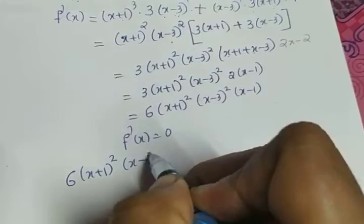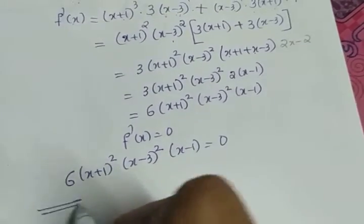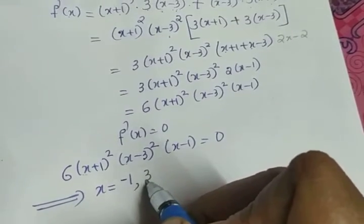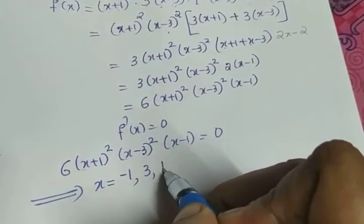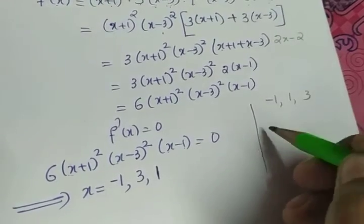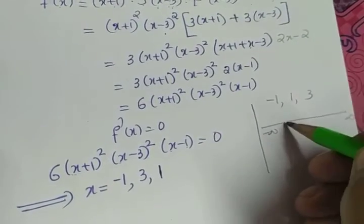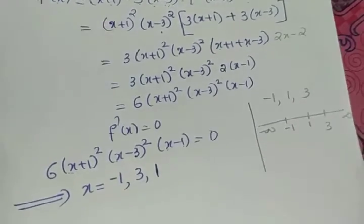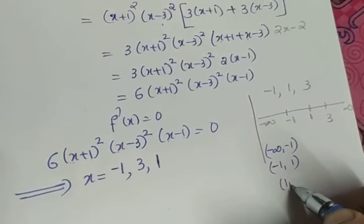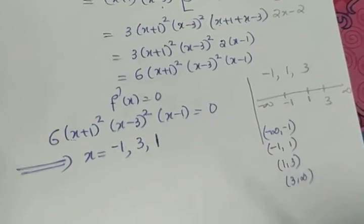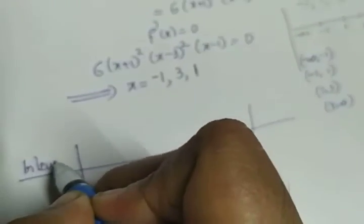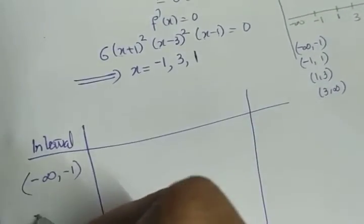Equating f'(x) = 0: 6·(x+1)²·(x-3)²·(x-1) = 0. This gives x = -1 (from x+1=0), x = 3 (from x-3=0), and x = 1 (from x-1=0). Arranged in ascending order: -1, 1, 3. Breaking the number line, we get four intervals: (-∞, -1), (-1, 1), (1, 3), and (3, ∞).